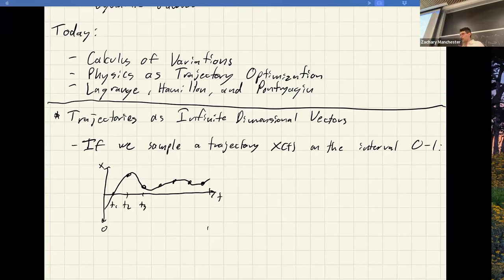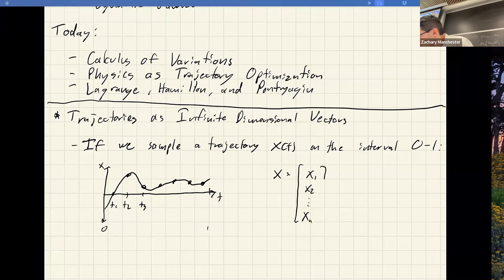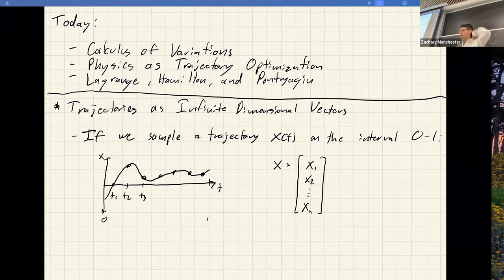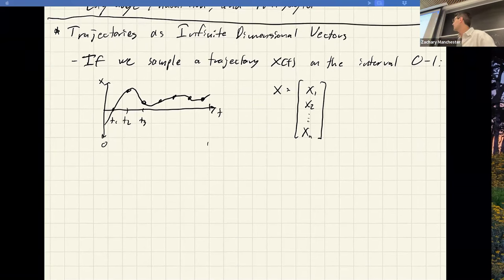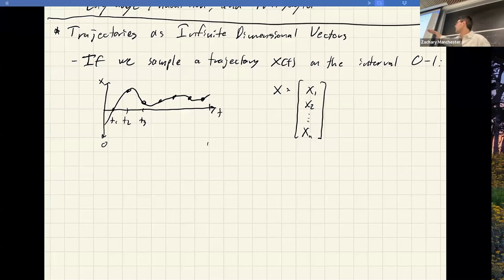If we take those sample points at times T_k and stack them into one vector up to X_N, that's the collocation setting. The idea here is to take the limit as N goes to infinity — from 10 Hz to 100 Hz to 1000 Hz to infinite Hz sampling. In that limit, the vector becomes an infinite-dimensional vector, recovering the continuous function X(t).